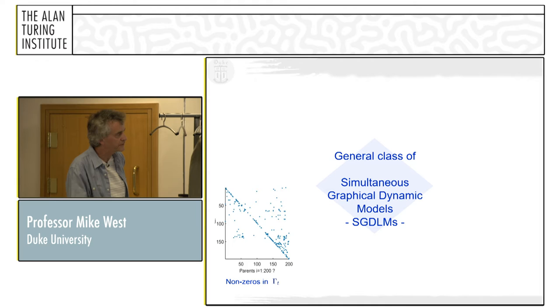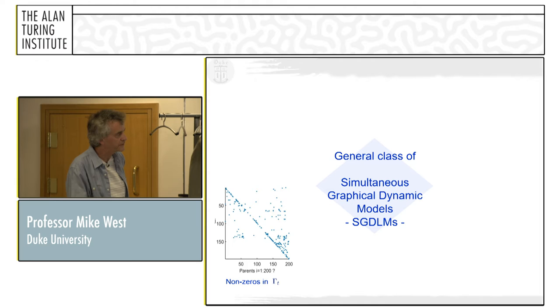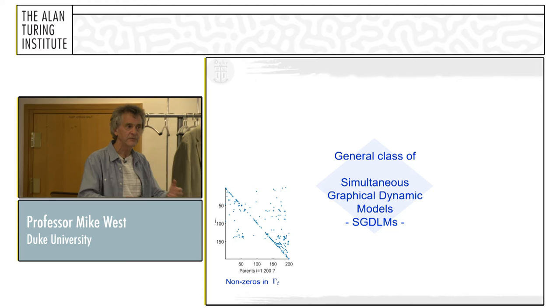To proceed in a decouple-recouple format when it's non-triangular, we call these SGDLMs — Simultaneous Graphical Dynamic Linear Models, conditionally linear, conditionally Gaussian. This is the picture to bear in mind: 200 series, very very sparse. Parsimony — we don't want lots of predictors of every series, we'll be overfitting madly. We go back to the notation of simultaneous parents for the cross-series structure. The conditionally independent innovation terms will have variances one over lambda, where lambda-t is the diagonal matrix of precisions.